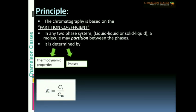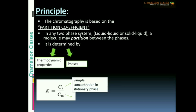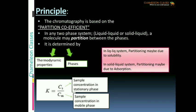The partition coefficient is denoted by the letter K and its formula is K = CS/CM, where CS stands for the sample concentration in the stationary phase and CM stands for the sample concentration in the mobile phase. In a liquid-liquid system, the partitioning may be due to the difference in solubility of the compound, and in a solid-liquid system, the partitioning may be due to adsorption on the stationary surface.